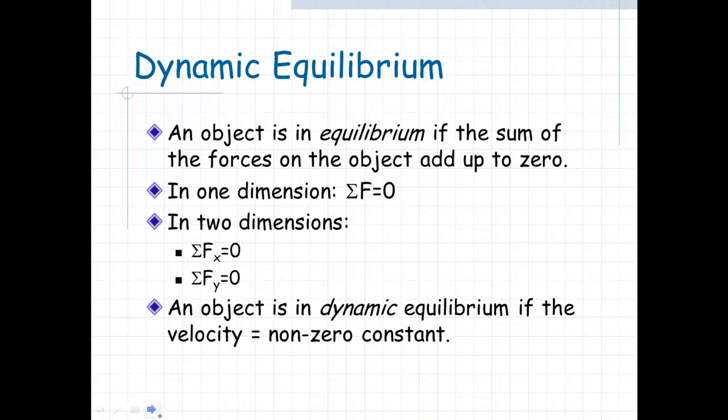Dynamic equilibrium problems are problems in which the object is in equilibrium. That means if you add up all the forces, the sum of those forces should equal zero. In one dimension, the sum of the forces equals zero. In two dimensions, it means the sum of the forces in the horizontal should equal zero and the sum of the forces in the vertical should equal zero.